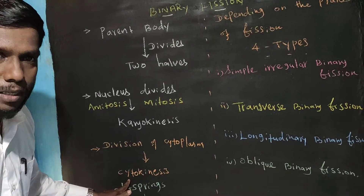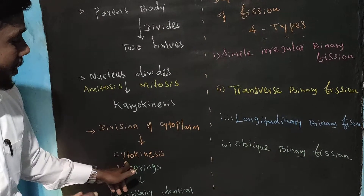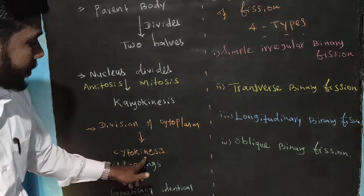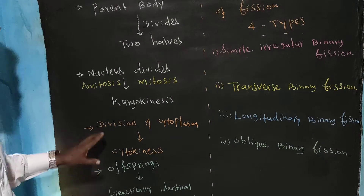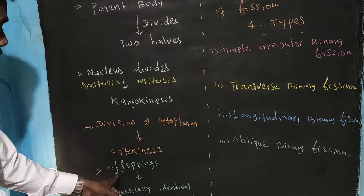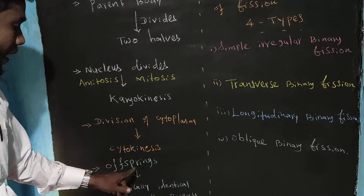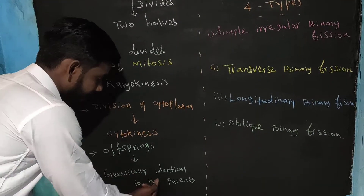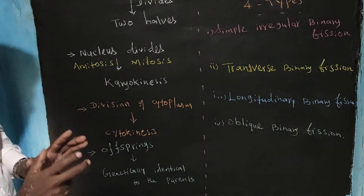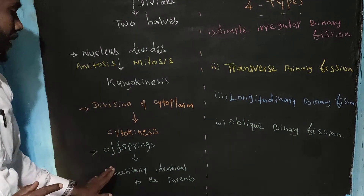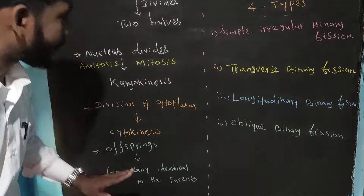In binary fission, the offspring are genetically identical to the parent. The same structures — the daughter organisms are genetically identical to the parent.